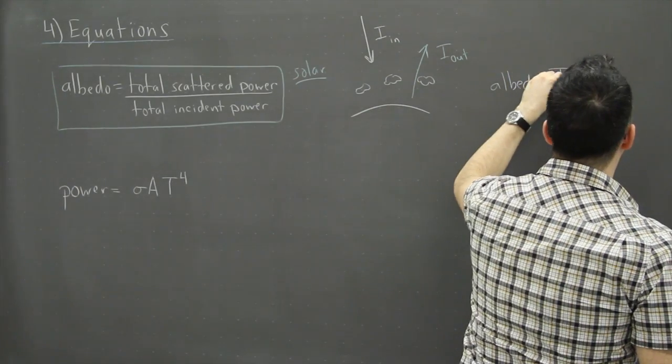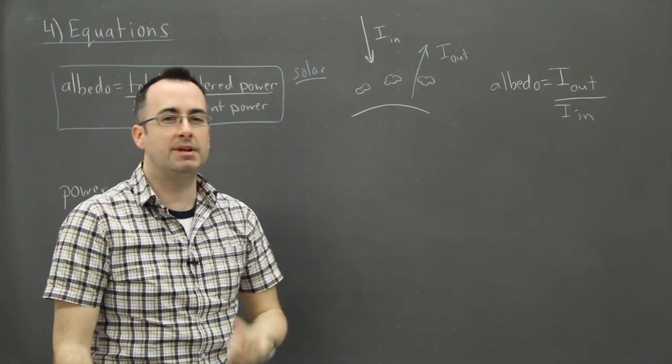But basically what I like to think about for albedo, I think this is maybe easier to look at, is just say I like to say I out over I in. That's really what you're doing here. You're looking at what comes out compared to what came in. It's a bit like an efficiency.